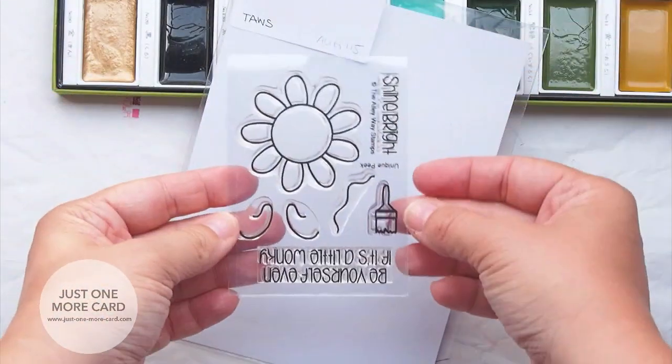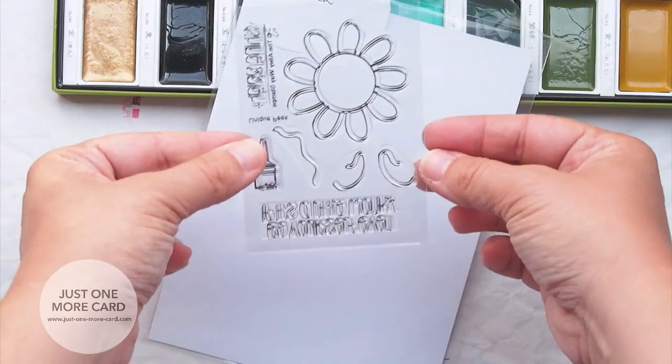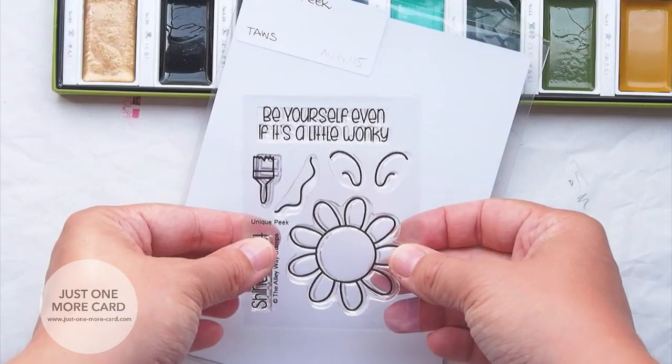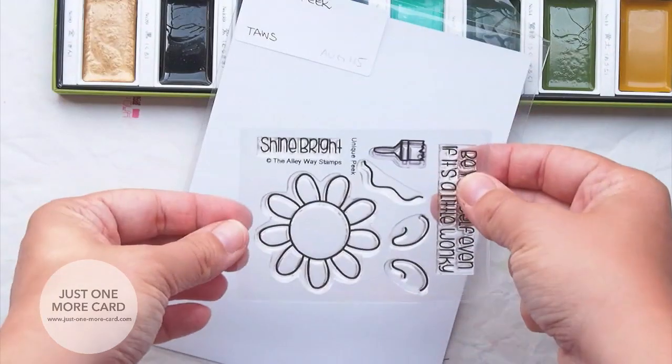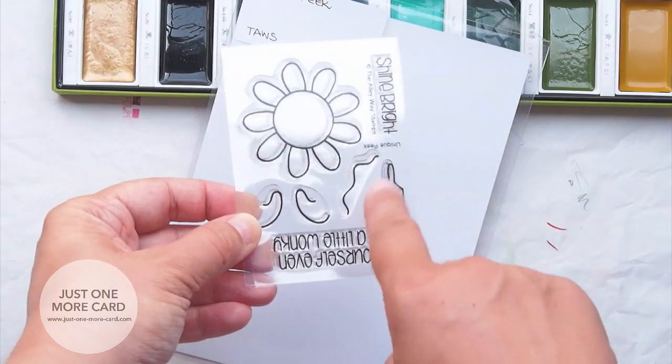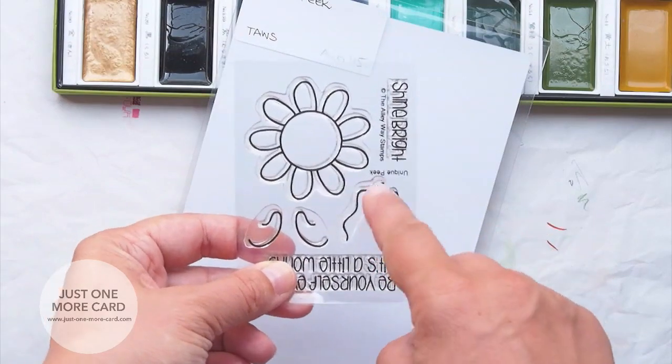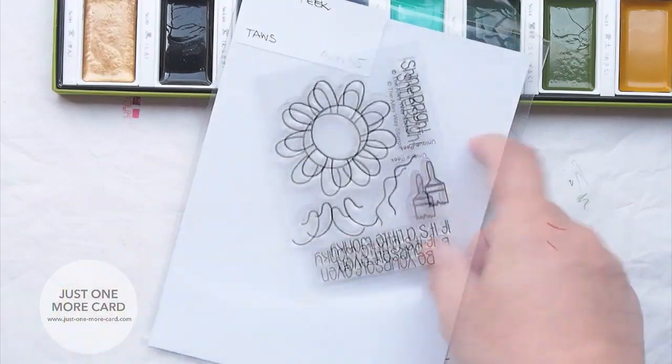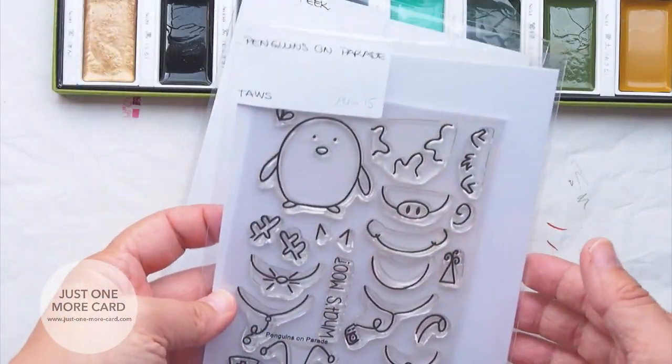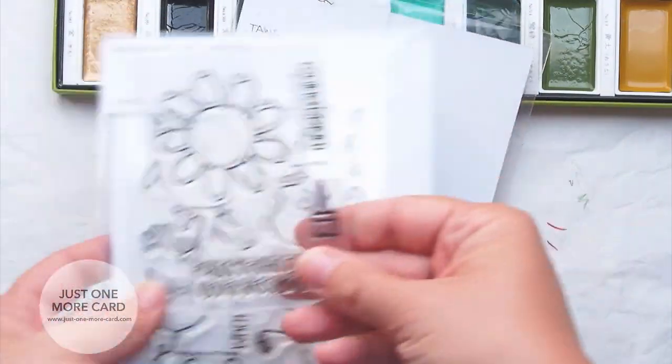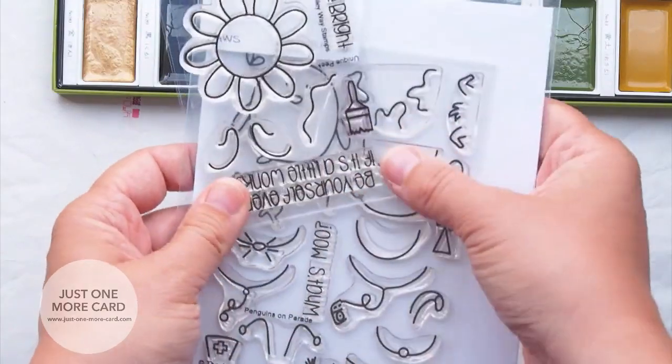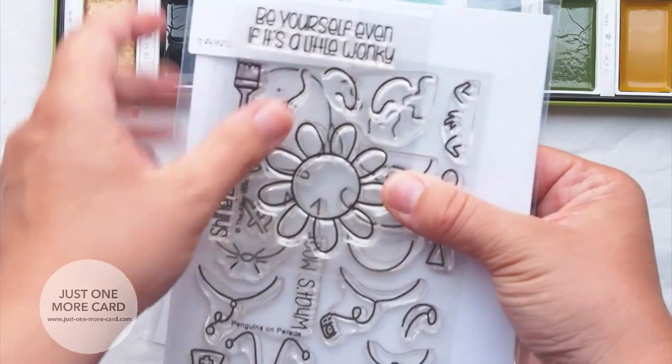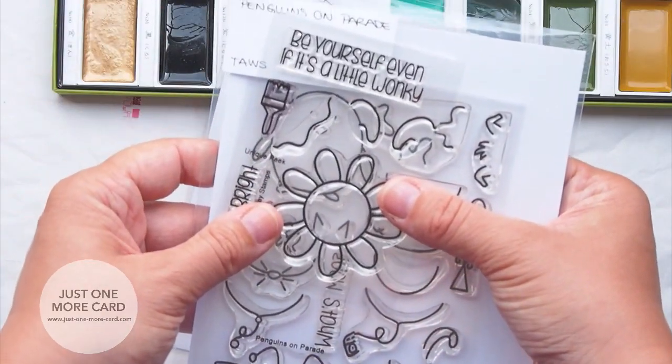Because that might not be terribly obvious, you have the sunflower, you have the paintbrush, and you also have sentiments like be yourself even if it's a little wonky and shine bright. We're going to be using the paintbrush today just to show that you can use one of these stamps by itself, but it coordinates with the newly released Penguins on Parade. For example, you can use this wonky line here on the penguin and make it look like he has drip paint onto himself.